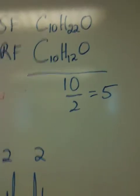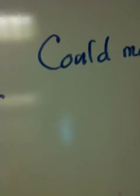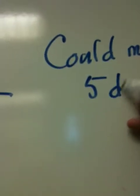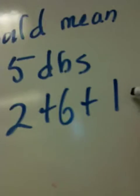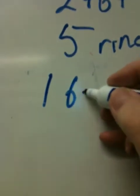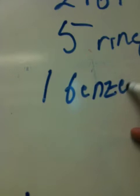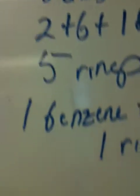You should really come and see me if you don't understand how to do that, because I had a feeling a couple days that people weren't really getting that. An unsaturation of 5 — what could it mean? It could mean 2 triple bonds plus 1 double bond, or it could be 5 rings, or 1 benzene plus 1 ring, or something like that. There are all different kinds of combinations that could be.